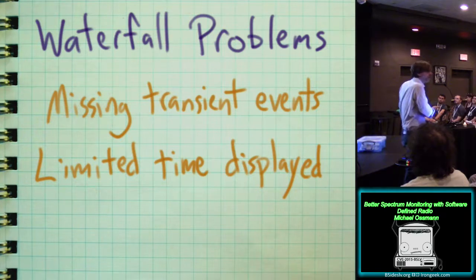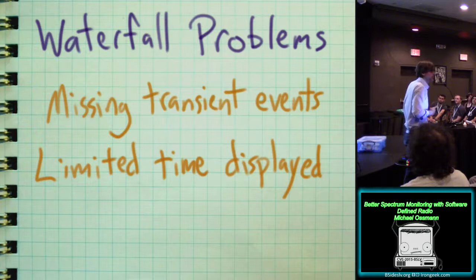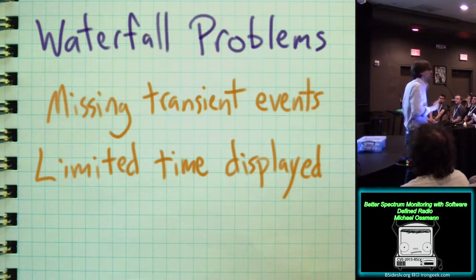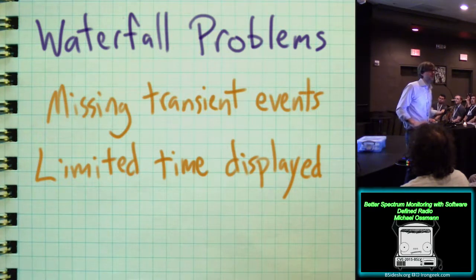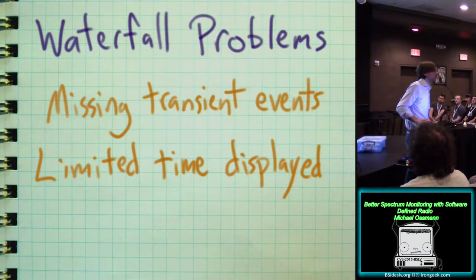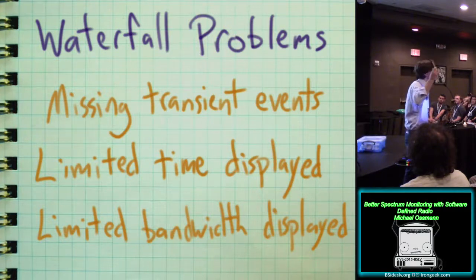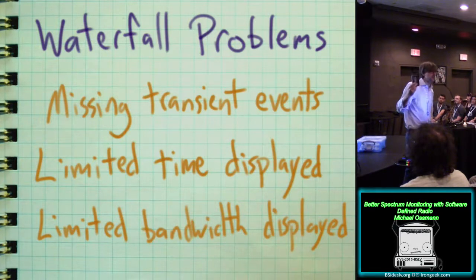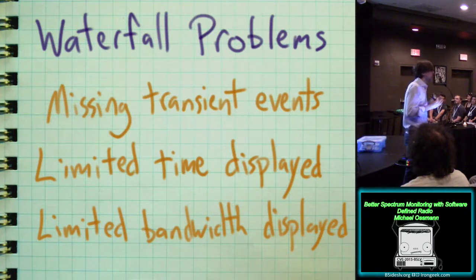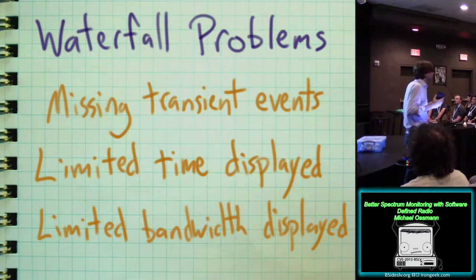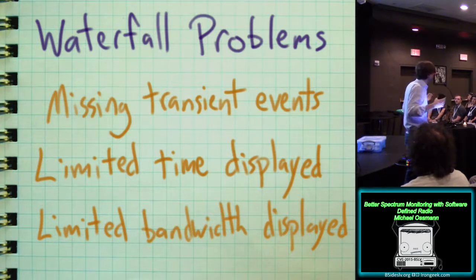Another limitation of waterfall displays is that you can only see a certain limited period of time. Now you can turn down the speed of the waterfall, in which case the other problem becomes more severe. But these are two sort of, you have a trade-off there. The faster your waterfall, the less time you see. And sometimes it's nice to observe trends over time. Another limitation of waterfalls is that you get limited bandwidth. Now HackRF, for example, operates over about 6 gigahertz of operating frequency range. But the instantaneous bandwidth that it measures is only 20 megahertz.